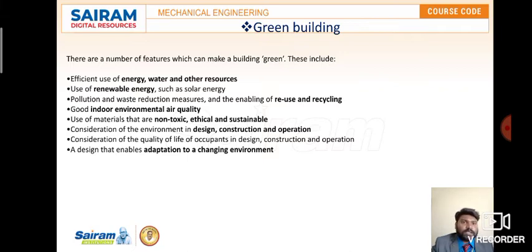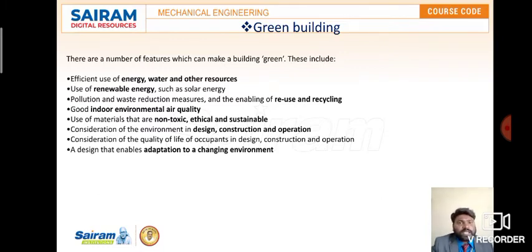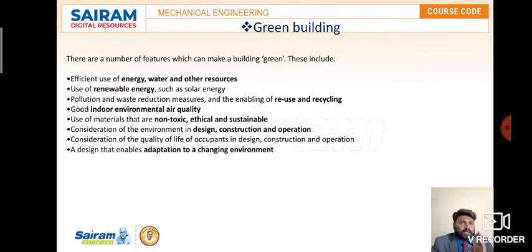Another feature is the usage of materials that are non-toxic, ethical, and sustainable — choosing the right materials is very important. For design, construction, and operation, consideration of the environment is essential. For example, in the automobile industry, leaded petrol was replaced by unleaded petrol to reduce environmental damage. Whatever we design, construct, or operate, we need to consider the environment. Quality of life for occupants must also be ensured while remaining environment-friendly.